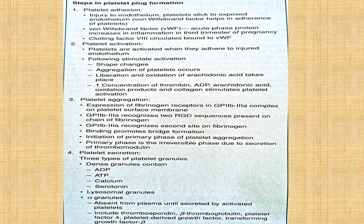In summary, the steps in platelet plug formation are: adhesion, activation, aggregation, and secretion. Key questions to review: what helps in adhesion, what changes occur in activation, what helps in aggregation, and what are the contents of platelet granules.